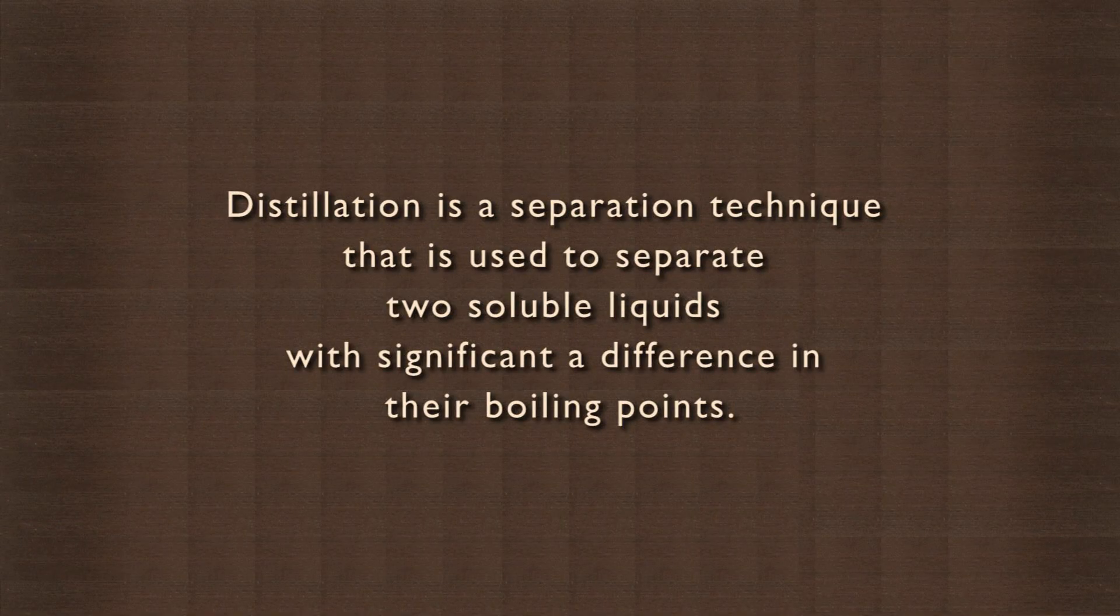If we have a solution of alcohol and water and want to get pure alcohol from it, how can we separate them? Alcohol is separated from water through the process of distillation. Distillation is a separation technique used to separate two soluble liquids with significant difference in their boiling points.